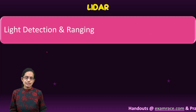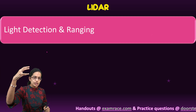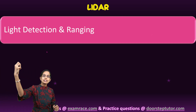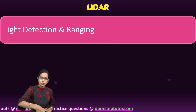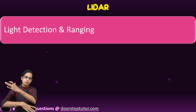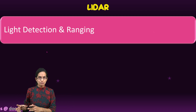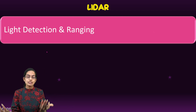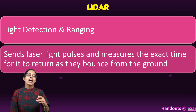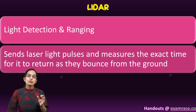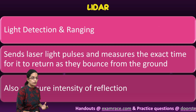What happens is you have the laser lights which send beams or pulses. These laser pulses are sent onto the ground, bounce back, and that returning signal is captured — that is the main process that forms the basis for LIDAR. Through this, the intensity of reflection is also taken into account.